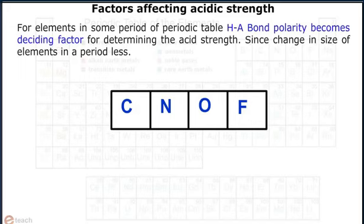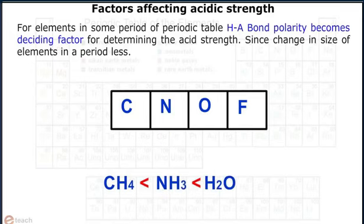For elements in same period of periodic table, H-A bond polarity becomes deciding factor for determining the acidic strength since change in size of elements in a period is less.